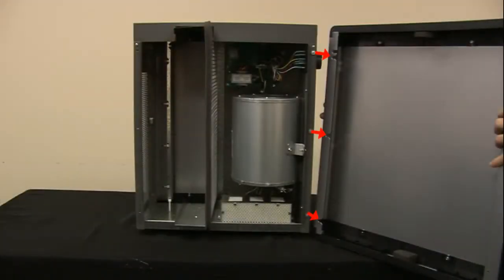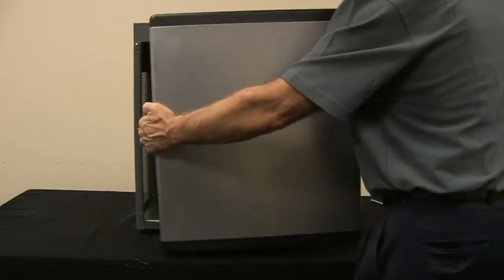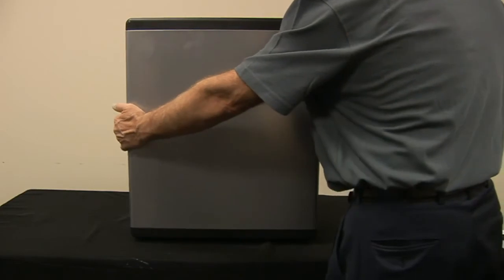Stand the unit upright. Align the fixed door slots with the large washers on the unit. Rotate the door and then slide it to the left under the washers as shown.